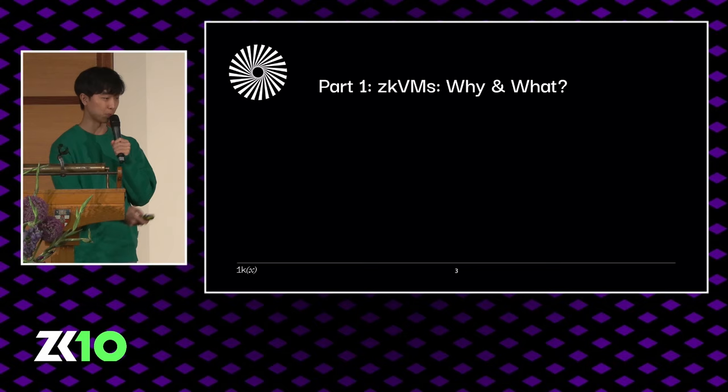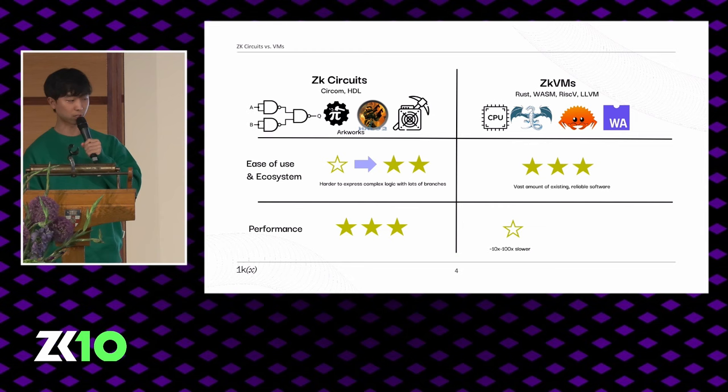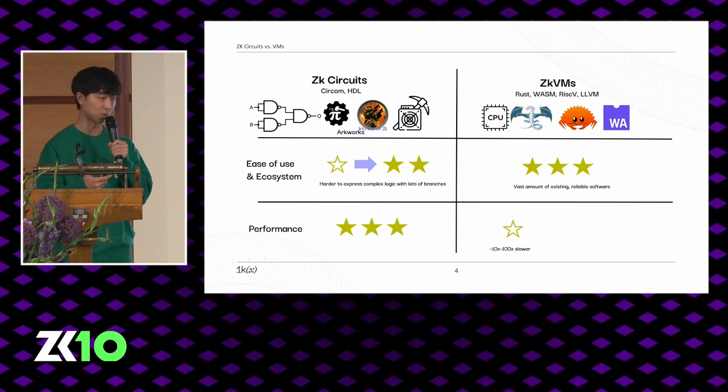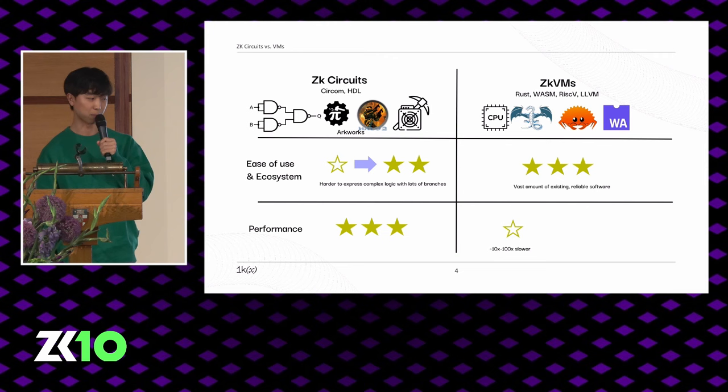So what are ZKVMs and why do we need them? The common comparison is between a ZKVM and a circuit — that of a general purpose processor and use-case specific hardware. A circuit generally tends to be faster because you have constraints tailored for the specific computation. In a ZKVM, you're proving execution of a general purpose VM, gaining advantages like existing compilers and higher level languages, but they're about 10 to 100X slower.